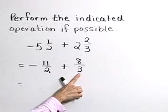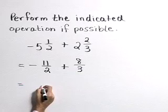Now we have denominators of 2 and 3. A common denominator for these is 6.